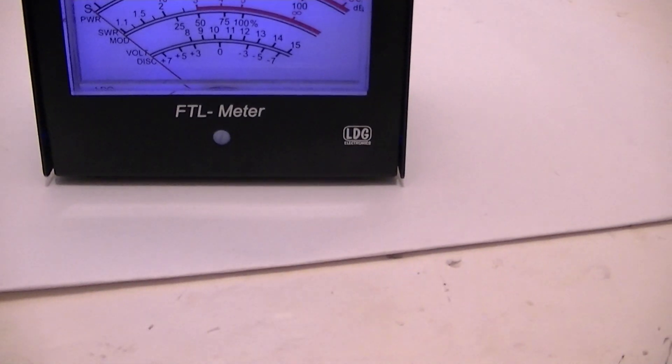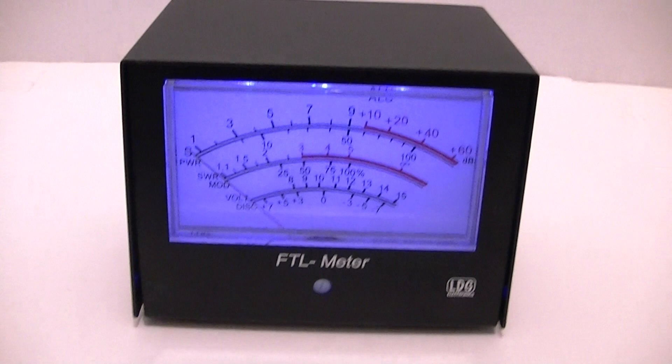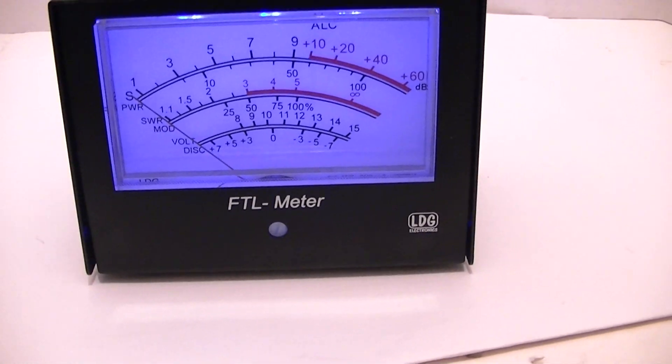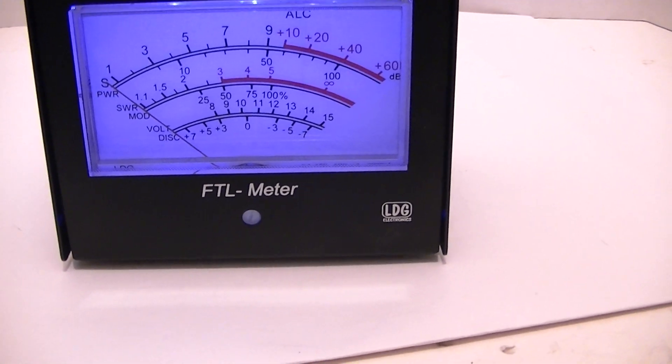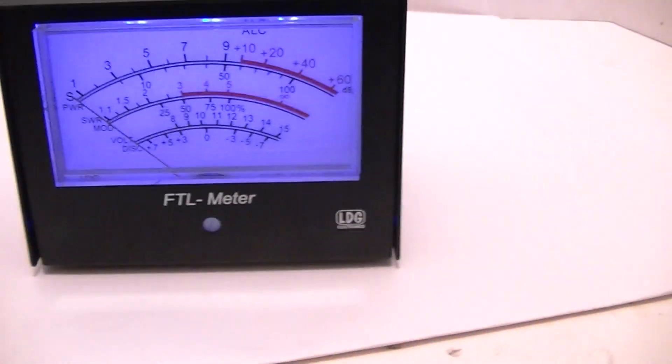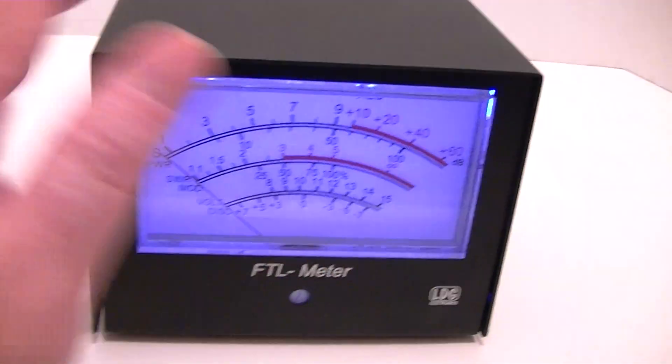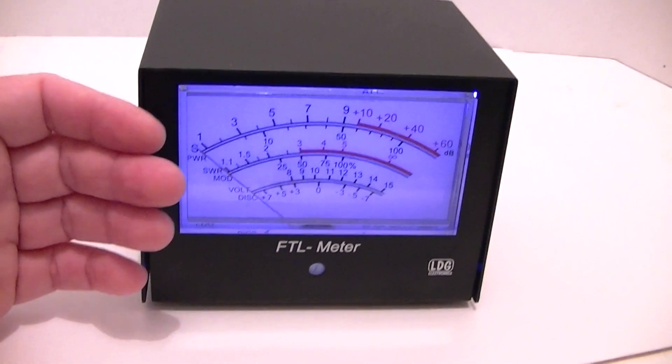If you want an analog meter that's the way I would go instead of an SWR meter. It's definitely proprietary like I said for the radio, but it is definitely accurate and it works real well. They make two different sizes. Again, this is the larger size.